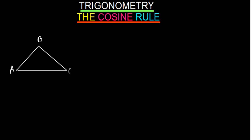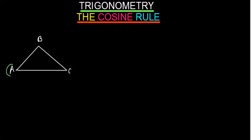You remember what we said? If this is angle A, the side where A is facing, that is going to be small a. If this is angle B, the side where B is facing, that is going to be small b. If this is C, the side where C is facing, that is going to be small c. So the cosine rule in this case is going to give us a relationship of these sides.